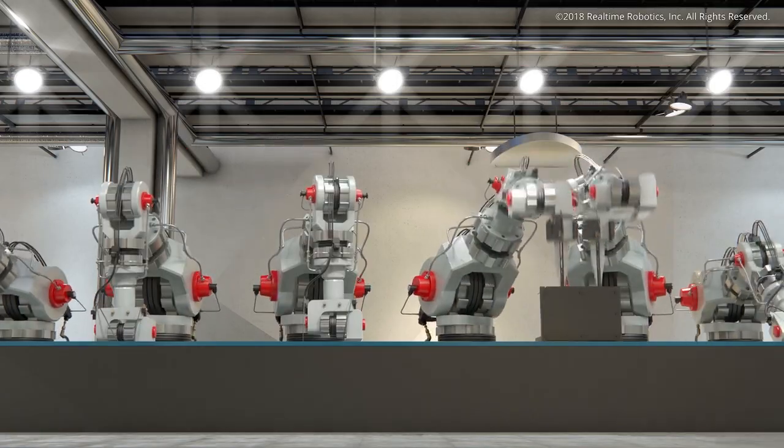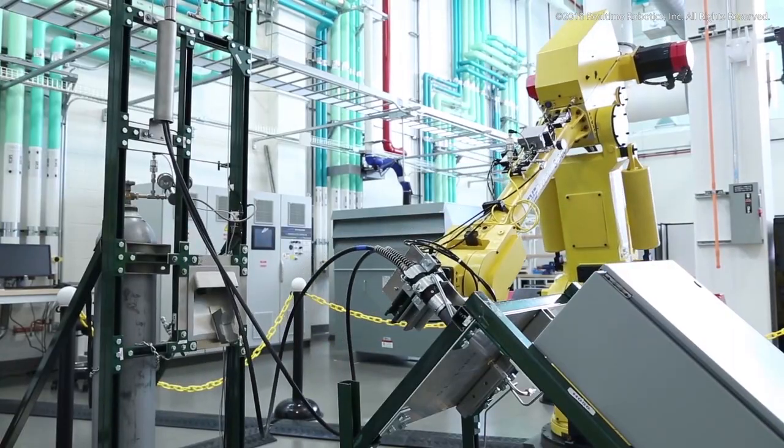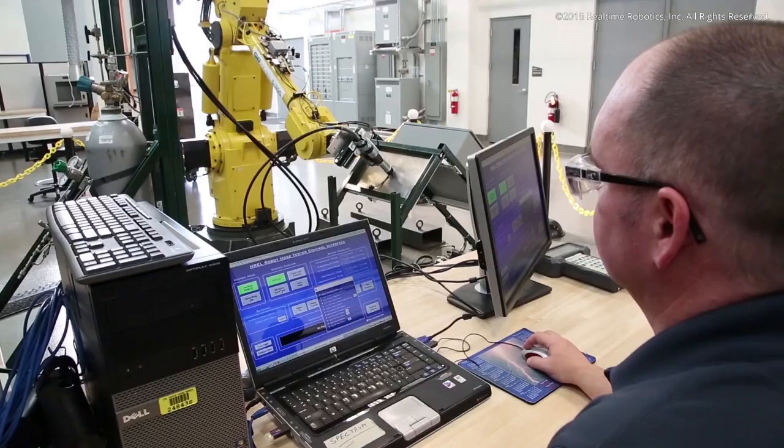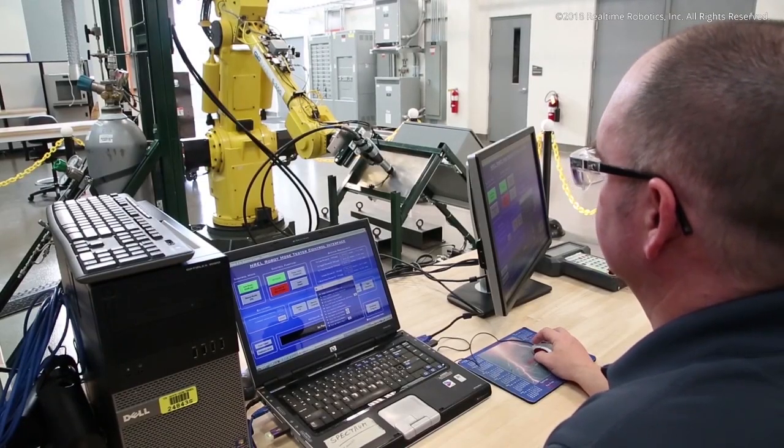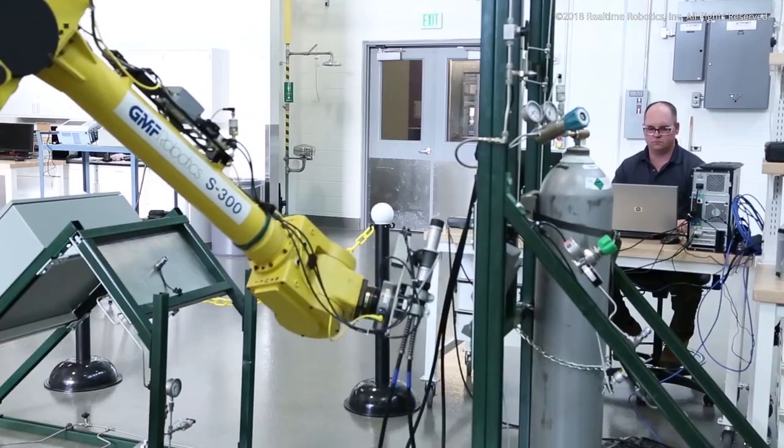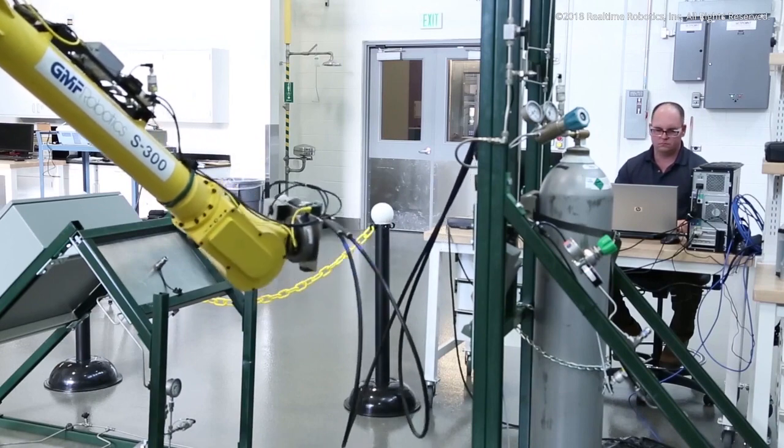Robots of today are simple machines, endlessly and precisely repeating motions that have been hand-tuned by engineers. Available systems relying on commodity hardware are too slow at processing the spatial data required to generate live motion plans.